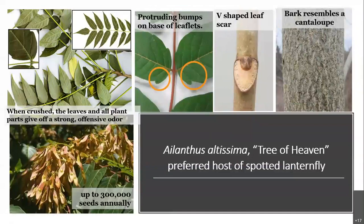One of the best ways to detect SLF is to keep an eye out for its favorite host — tree of heaven, which is also an invasive species. It is thought that tree of heaven is needed for SLF to complete its life cycle. Tree of heaven is often found in urban areas and unlikely places like alleyways. It has pinnately compound leaves with 10 to 40 leaflets in an alternate arrangement, and bark that resembles the skin of a cantaloupe. It's sometimes confused with sumac or walnut due to its leaf arrangement. Tree of heaven grows fast, very easily, and is also allelopathic — meaning it toxifies the soil and stops other vegetation from growing nearby.